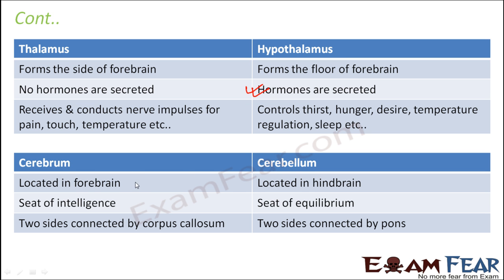Cerebrum and cerebellum. Cerebrum is a part of the forebrain. Cerebellum is a part of the hindbrain. Cerebrum is the seat of intelligence and cerebellum is the seat of equilibrium. Cerebellum tries to maintain balance, but cerebrum is the place where your memory, intelligence, and thought process are located. So they are very different in their functions.